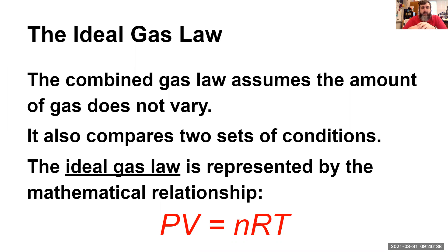The combined gas law assumes, first off, that the amount of gas does not vary. The ideal gas law does not do that. The ideal gas law assumes that you can have a different amount of gas. Also, the combined gas law compares two sets of values. You're going to have two pressures, two volumes, two temperatures, but the amount of gas does not change.